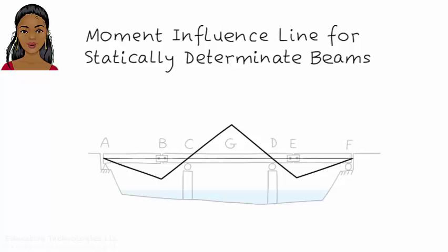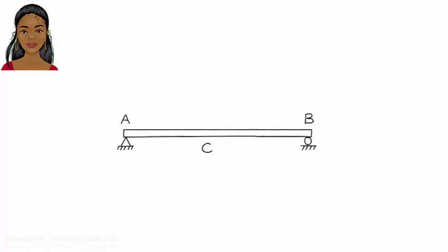Now let's see how a moment influence line can be drawn qualitatively. To draw the moment influence line for a point, we follow three steps. One: place a hinge at the point of interest. Two: apply a positive bending moment to the hinge. Three: draw how the beam displaces as a result. Note that a positive moment here means a pair of moments — a counterclockwise moment at the left end of the hinge and a clockwise moment at the right end of the hinge.